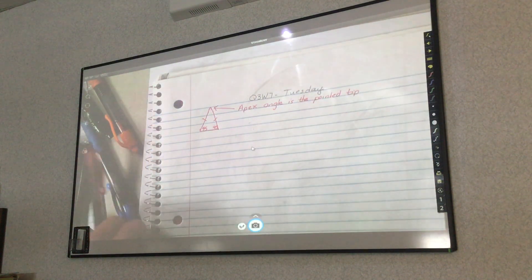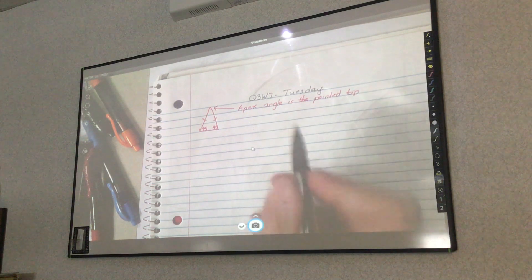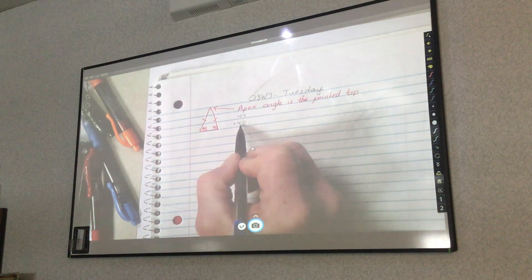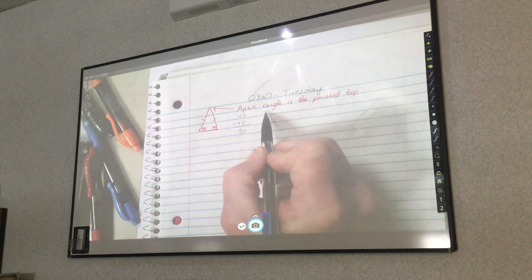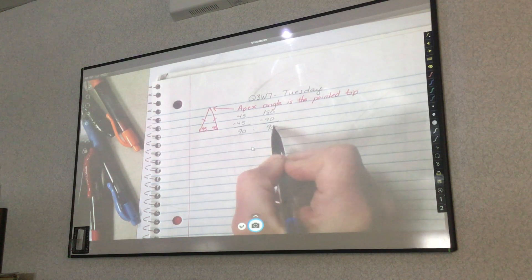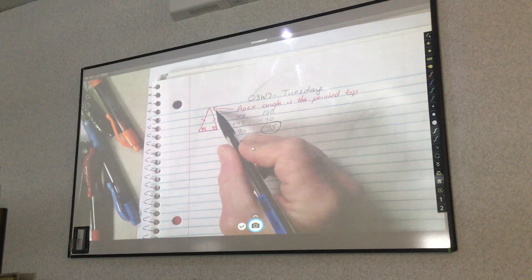So now that we know two angles measurements, 45 plus 45 is 90, take 180 minus 90, and you get 90 for that angle measurement.